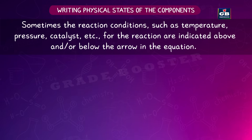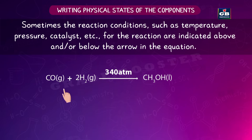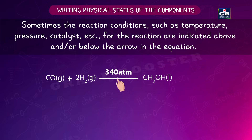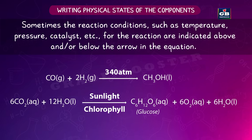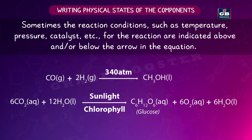For example: CO(g) + 2H₂(g) → CH₃OH(l), with 340 atm indicated on the arrow showing the atmospheric pressure for this reaction. In another reaction: 6CO₂(aq) + 12H₂O(l) → C₆H₁₂O₆(aq) + 6O₂(aq) + 6H₂O(l). This reaction takes place in the presence of sunlight and chlorophyll, mentioned above and below the arrow.